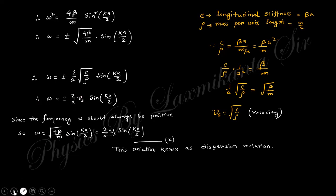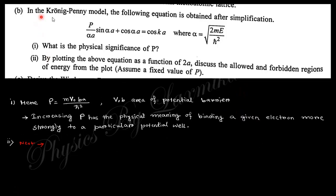This we discussed in the theory class on solid state physics. You can go through the description box for the total playlist. Next question: in the Kronig-Penney model, the following equation is obtained after simplification. What is the physical significance of P? P is actually mv₀ba/h. This physical means the binding of the given electron more strongly to the particular potential. This value signifies the binding of the electron.